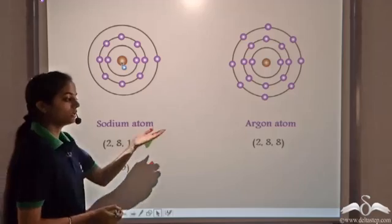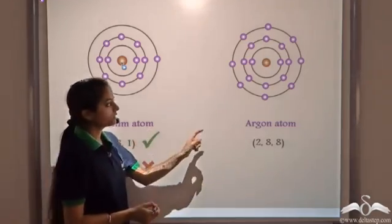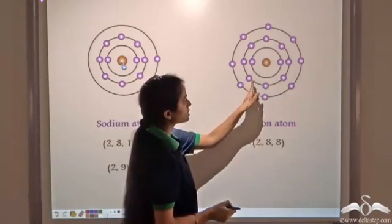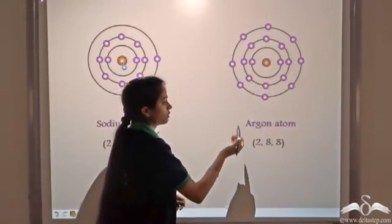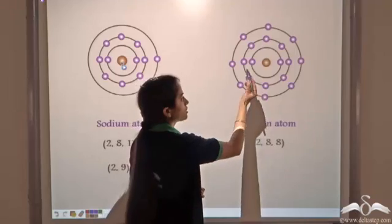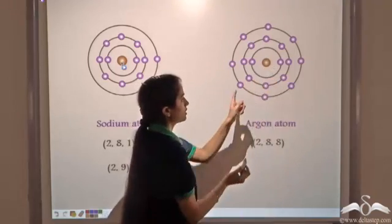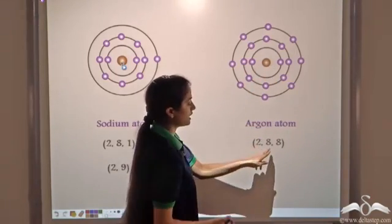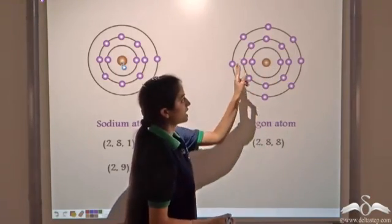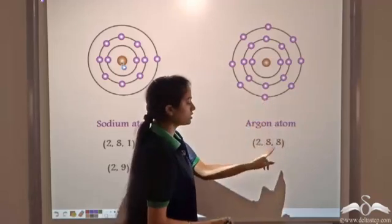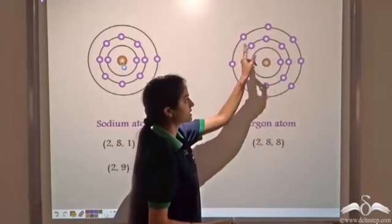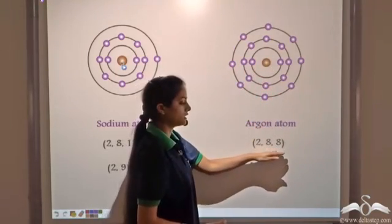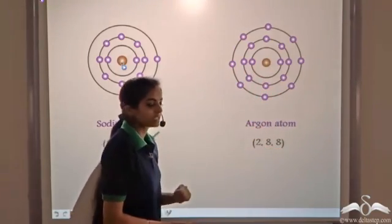For the argon atom, which has 18 electrons, by the 2n² rule the first shell has 2 electrons (K shell), the L shell has 8 electrons, and the M shell has 8 electrons. So the electronic configuration of argon is 2, 8, 8.